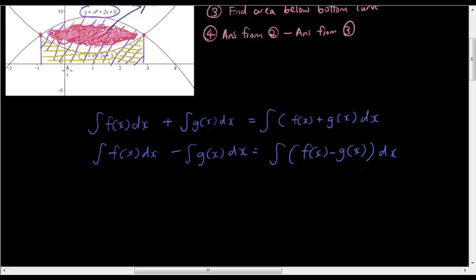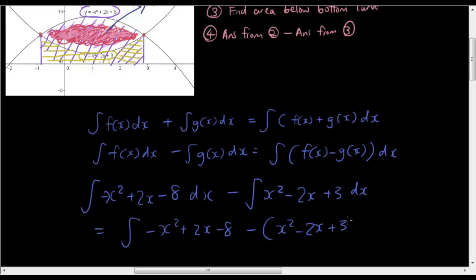what happens is we have the line at the top, which is the integral of negative x squared plus 2x minus 8 dx minus the integral of x squared minus 2x plus 3, which is equal to the integral of negative x squared plus 2x minus 8 minus (x squared minus 2x plus 3), this whole thing dx.